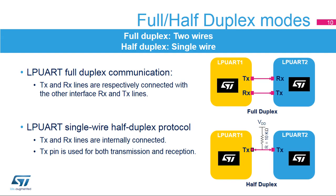The LP UART supports full duplex communication, where the TX and RX lines are respectively connected with the other interface's RX and TX lines. The LP UART can also be configured for single-wire half-duplex protocol, where the TX and RX lines are internally connected.